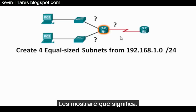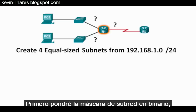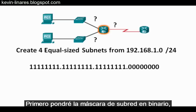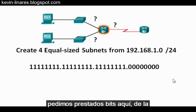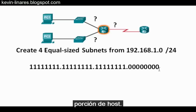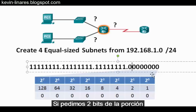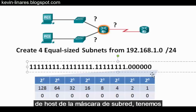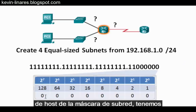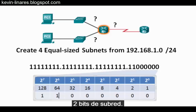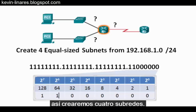I'll show you what I mean. First, I'll write out the subnet mask in binary, so we'll be borrowing bits from the host portion. If we borrow two bits from the host portion of the subnet mask, we now have two subnetwork bits, and two to the second power is four, so that will create four subnets.